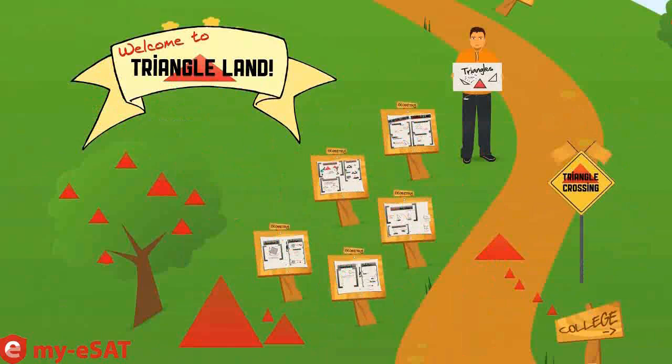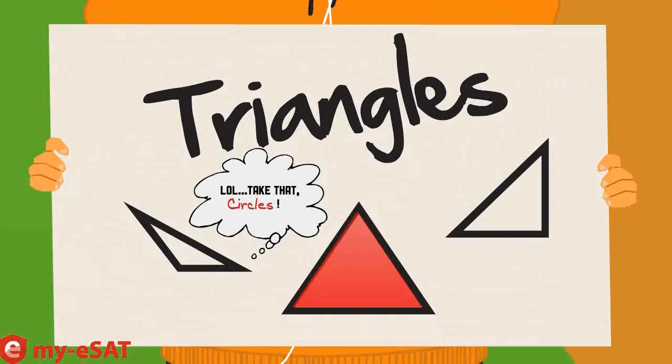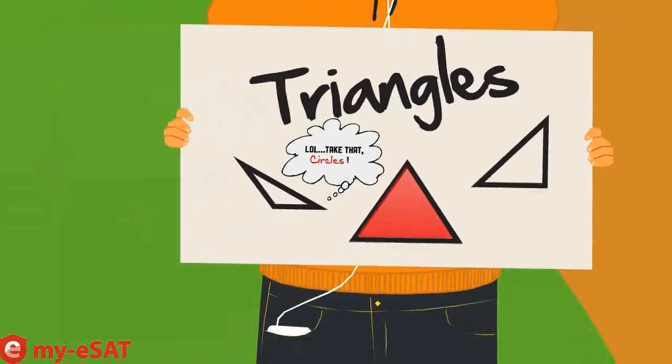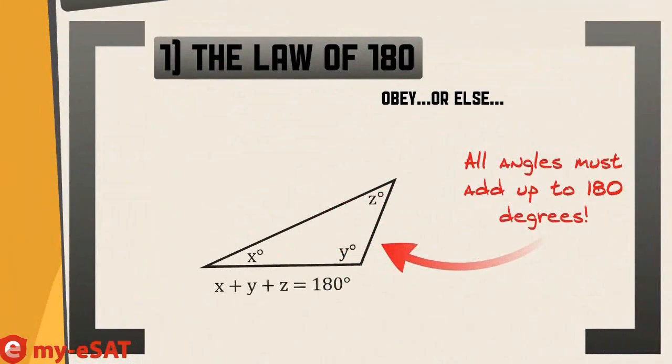The number one type of geometry questions tested relates to triangles. To answer these questions correctly, you need to know several important laws about triangles that all triangles obey. The first law I want to go over is the law of 180. This is just one of the rules that govern all triangles' lives, or else they get expelled and aren't allowed to be called a triangle anymore.